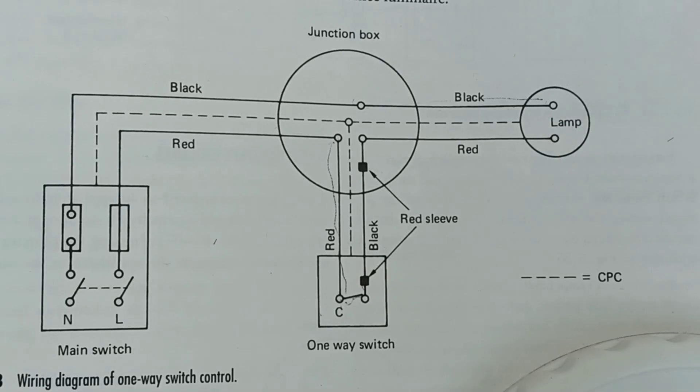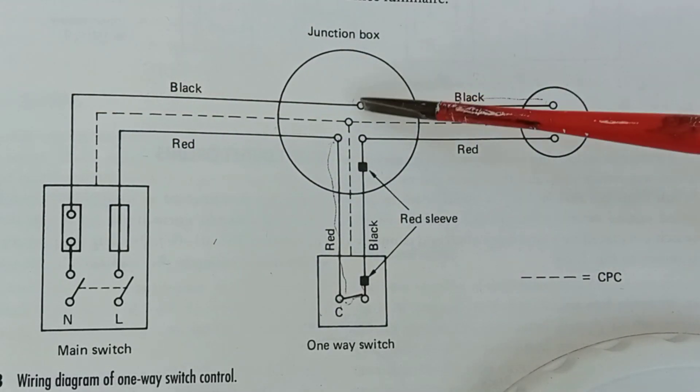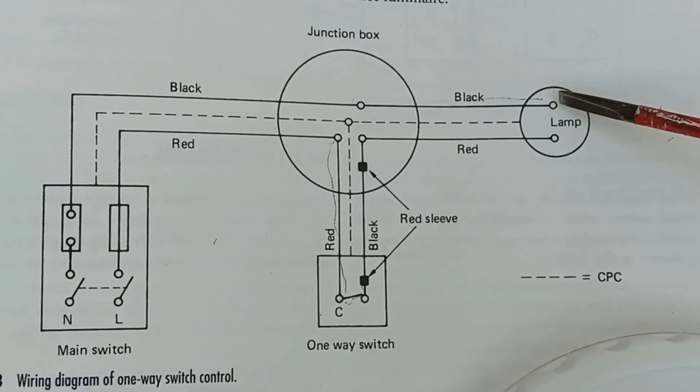The neutral is just terminated in the junction box and straight onto the lamp. It doesn't need switching.